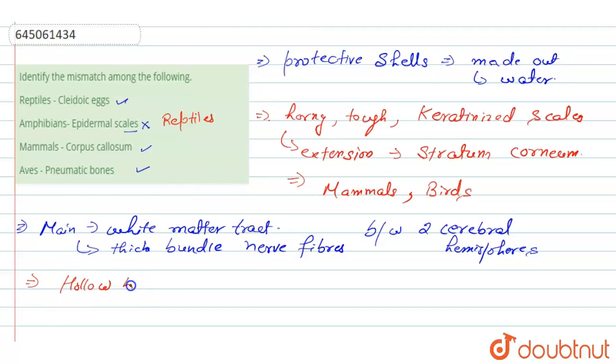These bones are present in birds and these hollow bones contain many air cells. Thus they are hollow as they contain air cells.